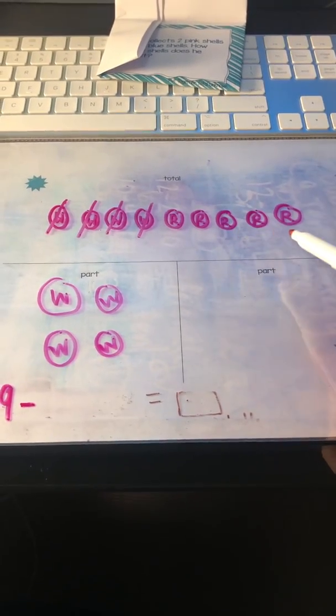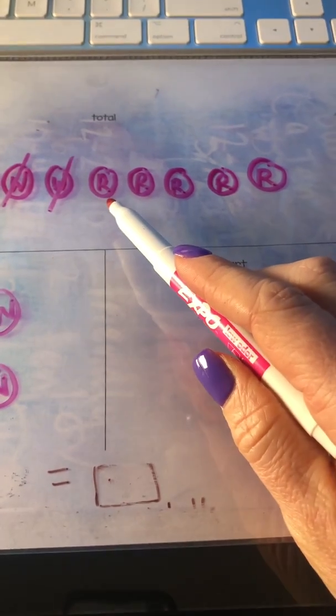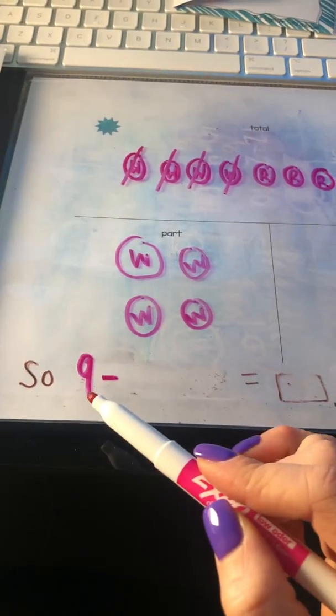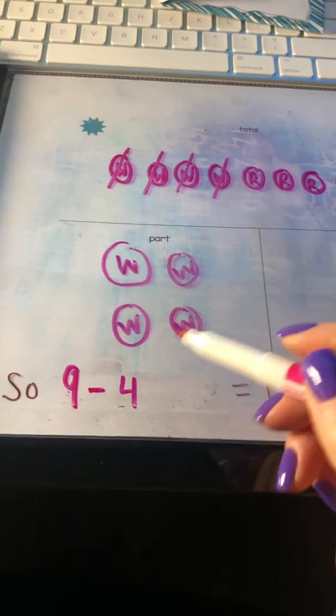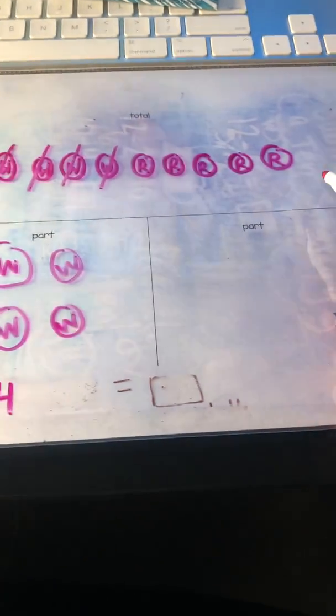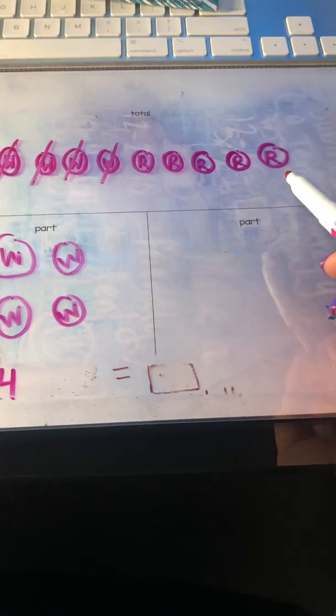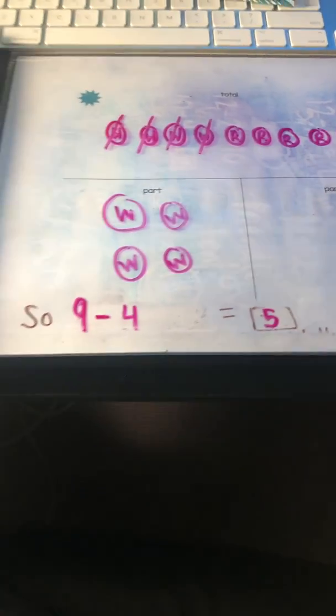Minus we're going to take away four white potatoes, so put the white potatoes down here, take them away. So how many red potatoes do we have left? Let's count them together. One, two, three, four, five. So then we know nine minus the four white potatoes equals how many red potatoes? One, two, three, four, five - equals five red potatoes.